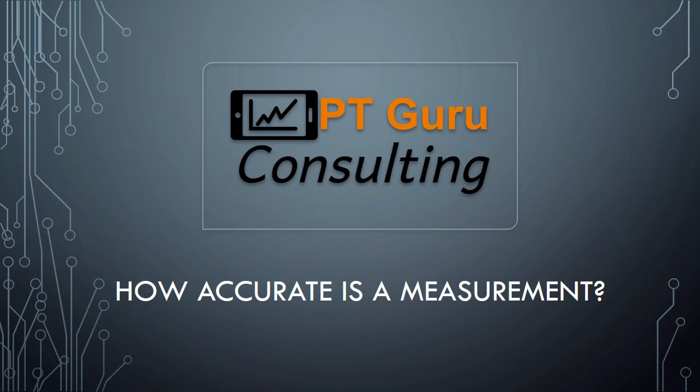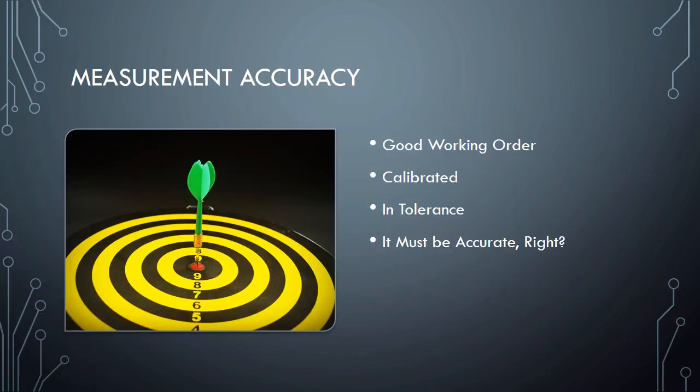We're talking about measurements, we're talking about calibration, comparing measurements, what all that means. Now we've got to talk about how accurate a particular measurement is. You took and you sent out your instruments. They're in good working order. They've been calibrated. You've got a nice certificate back. It says that they're in tolerance, so everything's what they should be. So they must be perfectly accurate, right? Well, yes and no.